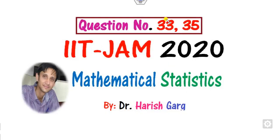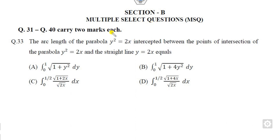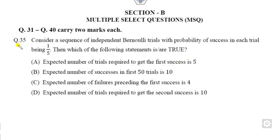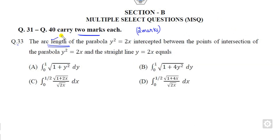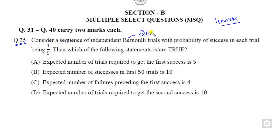Hello students, welcome to this next video on question numbers 33 and 35 asked in the IIT JAM 2020 Mathematical Statistics. Question 33 belongs to the two-marks category, so you get two marks if your answer is correct. This is related to the length of the arc. Similarly, question 35 is also here — after watching this video you will get four marks total. These are very simple questions solvable within one to two minutes.